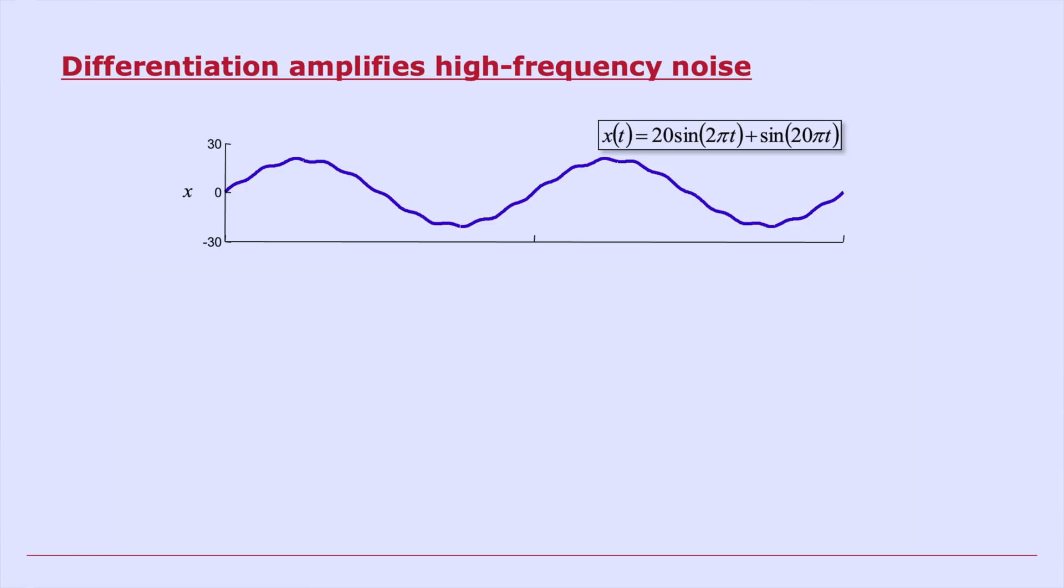Here's an example signal. There's a signal component here with an amplitude of 20 and a noise component with an amplitude of 1. So the signal to noise ratio is 20. We can tell where the signal is. It has a frequency of 1 hertz. And there's some low amplitude noise, some ripple there. It's not too noticeable.